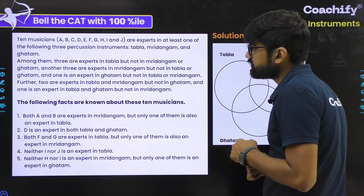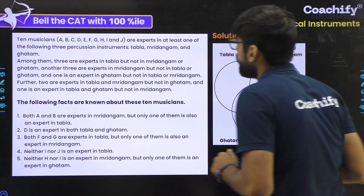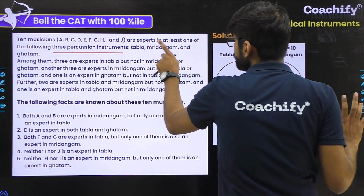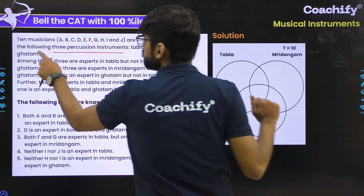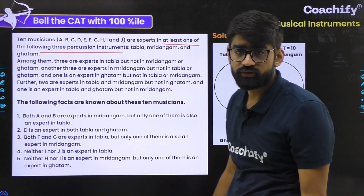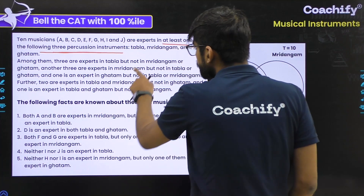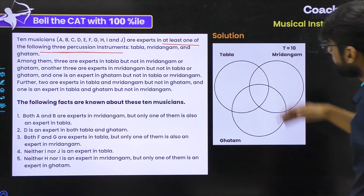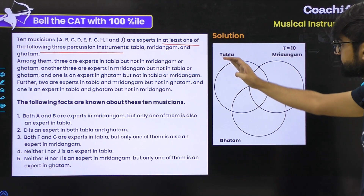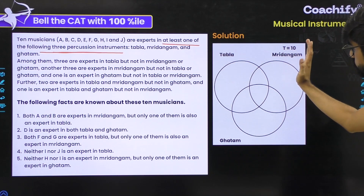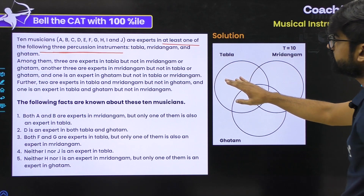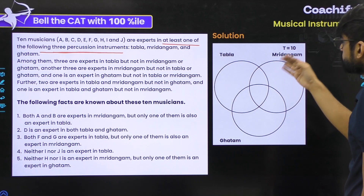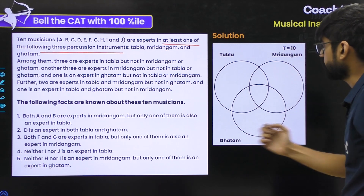It says that there are 10 musicians — A, B, C, D till J — and these are experts in at least one of the following three percussion instruments. When we read something like 'at least one of the three,' that means we are talking about a Venn diagram — specifically a three-set Venn diagram. Here I've made a three-set Venn diagram. The three sets are tabla, mridangam, and ghatam. These represent the number of musicians corresponding to each set. Total is 10.